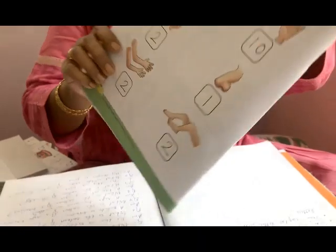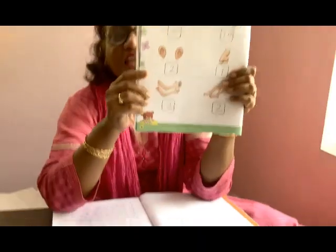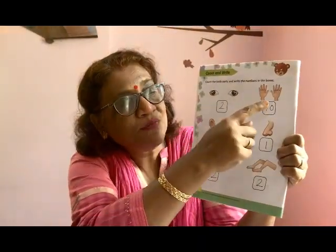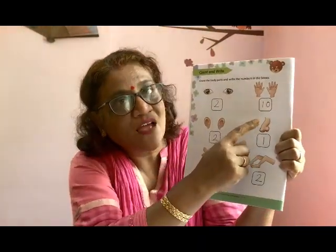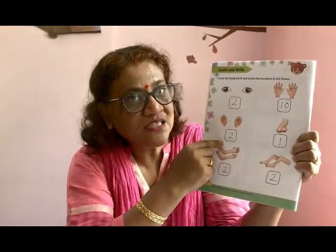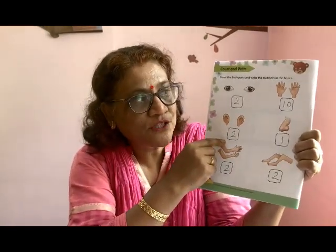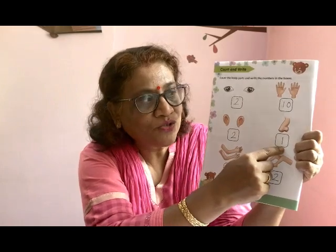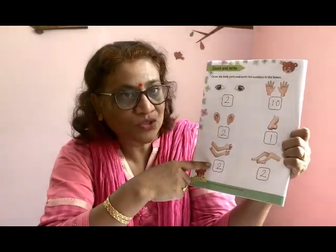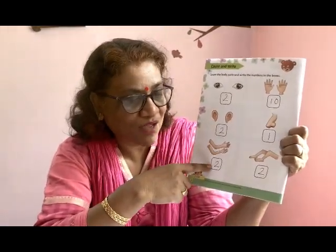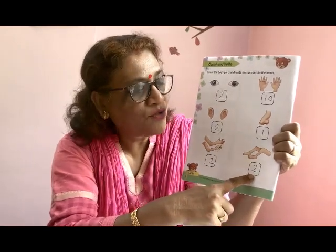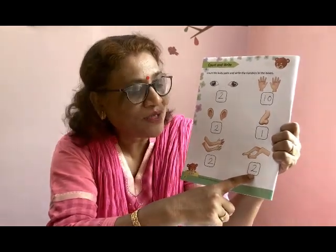Now let's do. How many eyes do you have? 2. How many fingers do you have in both your hands? 10. How many ears do you have? 2 ears. How many noses do you have? 1. How many hands do you have? You have 2 hands. How many legs do you have? You have 2 legs.